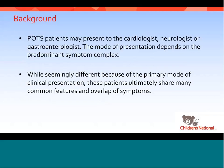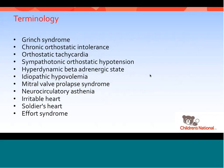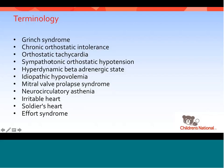While seemingly different because of their primary clinical presentation, these patients ultimately share many common features and overlap of symptoms. POTS is actually probably not a new disease — it was described during the Civil War as soldier's heart syndrome. Other names have included the Grin syndrome, chronic orthostatic intolerance, orthostatic tachycardia, sympathotonic orthostatic hypotension, beta-hypernergic state, idiopathic hypovolemia, mitral valve prolapse syndrome, neurocirculatory asthenia, irritable heart, or effort syndrome.